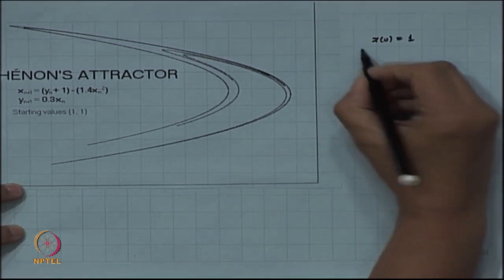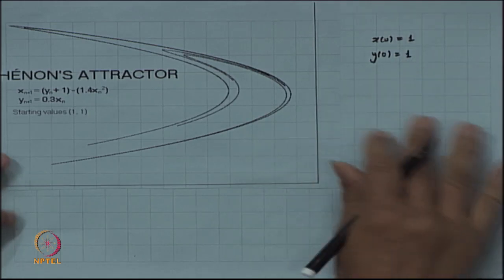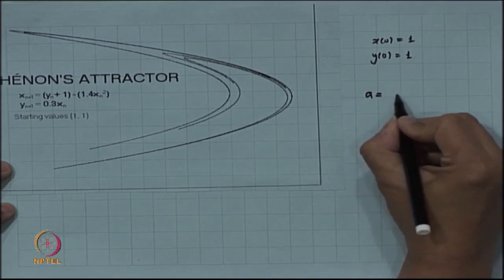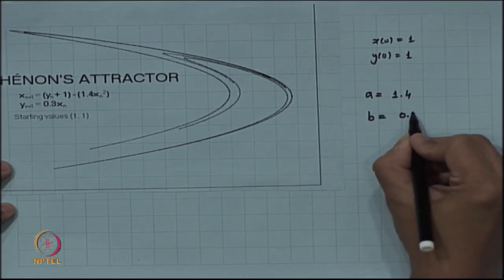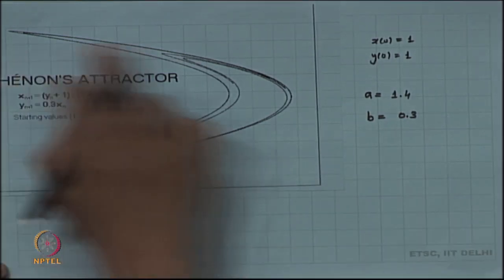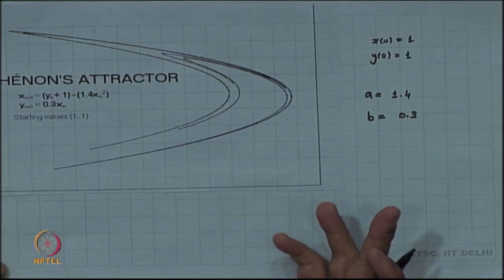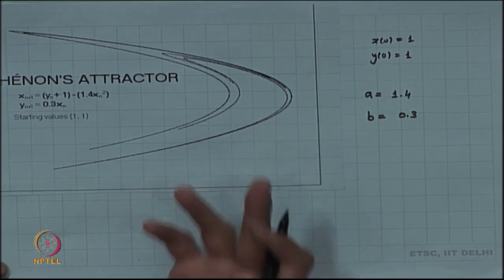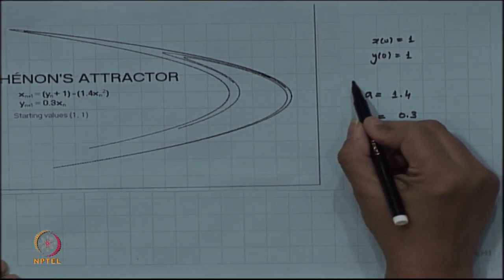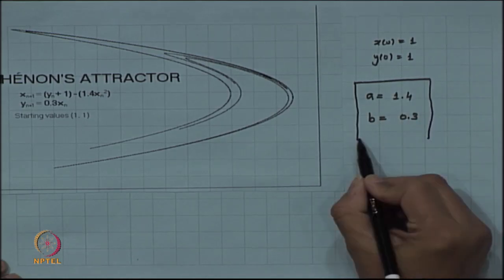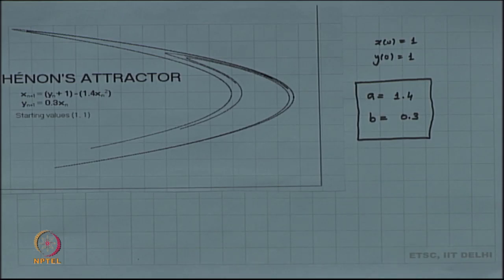Starting from the initial point (x₀, y₀) = (1, 1) with parameters a = 1.4 and b = 0.3, we find that the Hennon attractor is essentially like a horseshoe attractor. For these particular parameter values, the Hennon map has been studied well, and it gives a chaotic attractor whose dynamics is similar to that of a horseshoe attractor — conjugate to a full shift over two symbols.